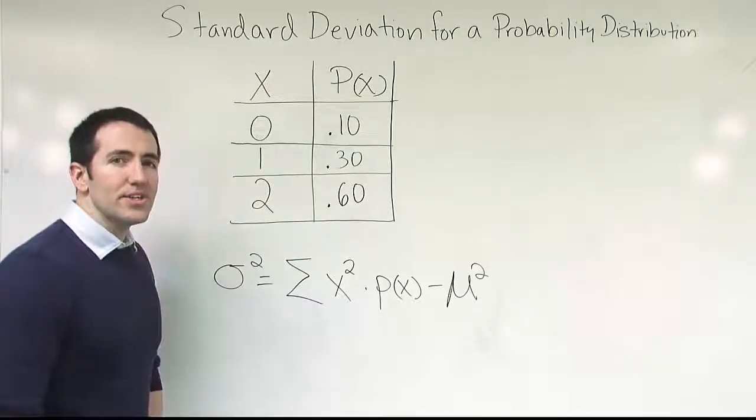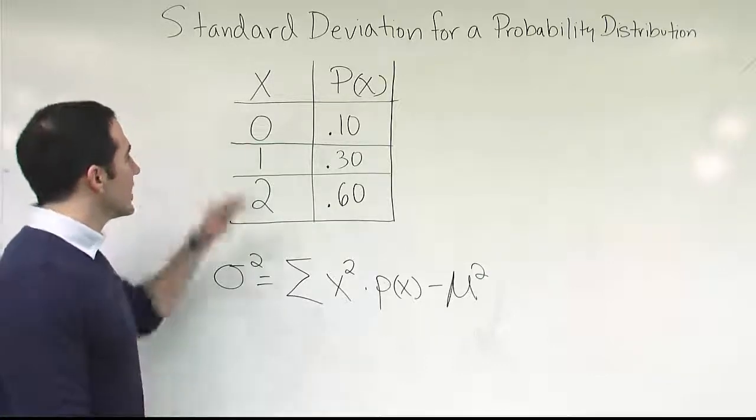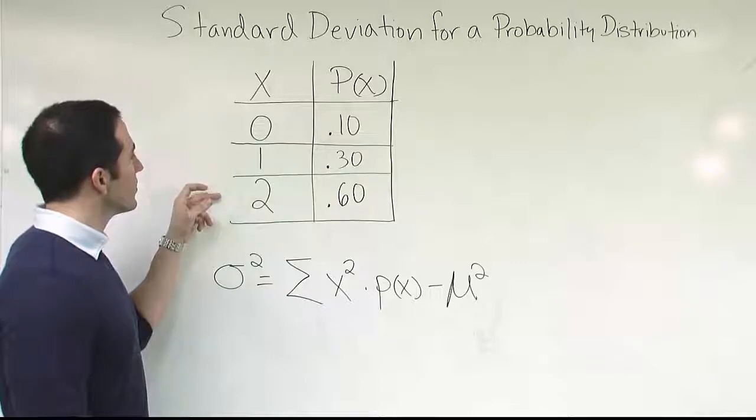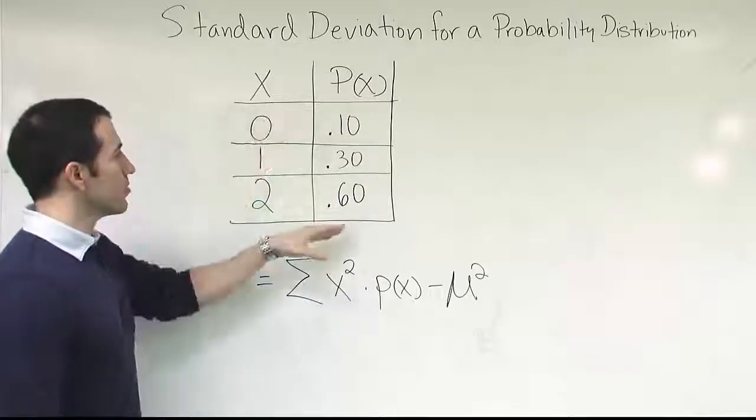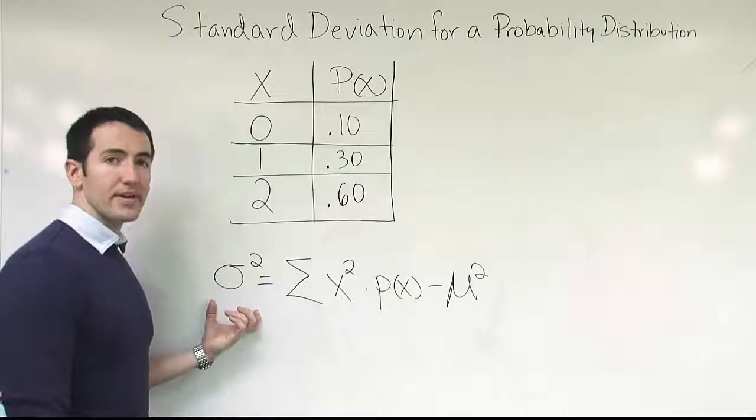Okay, so we're talking about standard deviation of a probability distribution here in this video. Of course, again, discrete probability distribution. So we have 0, 1, and 2 as the possible outcomes. These are associated probabilities. And what we're looking to do is define some measure of the standard deviation.